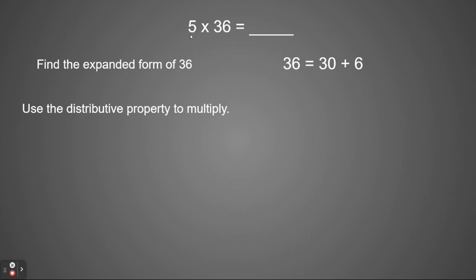So remember we had 36 times 5. We're now going to distribute the 5 through. So 5 times 30 plus 5 times 6. That's what the distributive property means. It's just taking the other factor and multiplying it through the number that we just expanded.